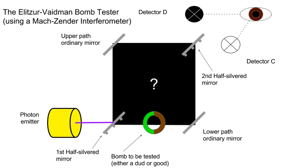A light-sensitive bomb is placed along the lower path. If the bomb is good, when a photon arrives, it will explode and both will be destroyed. If it's a dud, the photon will pass by unaffected. To understand how this experiment works, it is important to know that the bomb is a kind of observer and that this encounter is a kind of observation. It can therefore collapse the photon's superposition, in which the photon is traveling along both the upper and lower paths. When it reaches the live bomb or the detectors, it can only have been on one or the other.